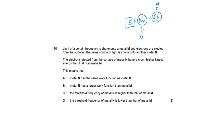Options A and B are incorrect because they suggest M has a higher work function than N (which would be consistent but the phrasing refers to M, not N). Since the work function of N is lower, and threshold frequency f₀ relates to work function by W = h·f₀, the threshold frequency for N is also lower. Therefore the correct answer is option D.